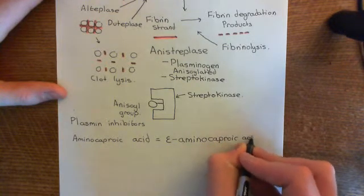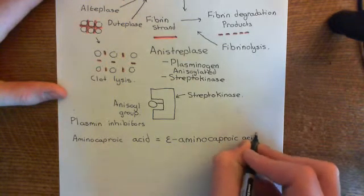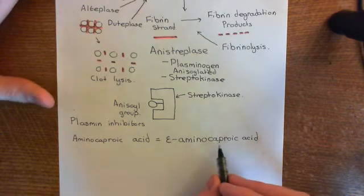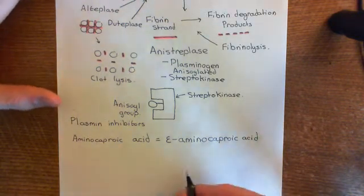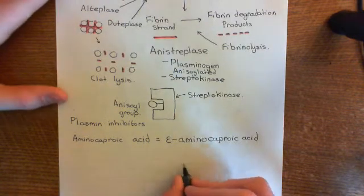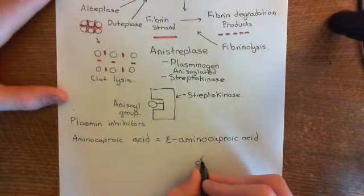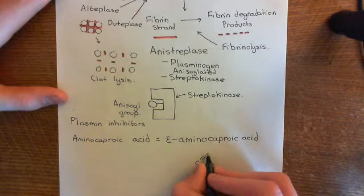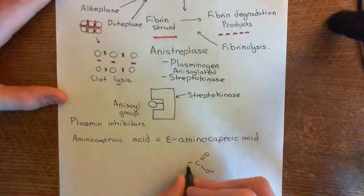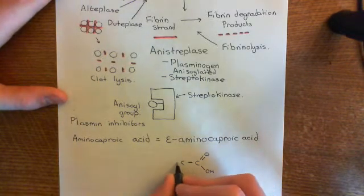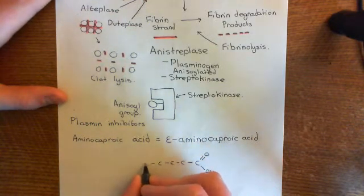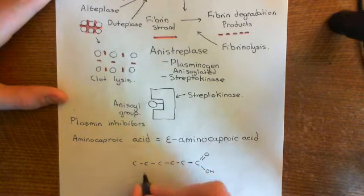To understand the structure of this molecule, we need to know what caproic acid is. Caproic acid is basically a six-carbon carboxylic acid. Here's the carboxylic acid group, and then we need six carbons: one, two, three, four, five, six.